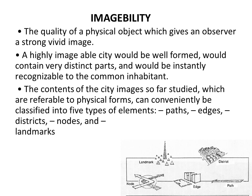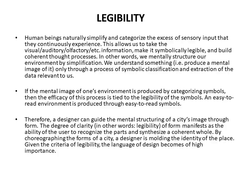The contents of city images referable to physical forms can be classified into five types of elements. First is paths — walkways, streets, roads. Second is edges — how streets intersect with buildings or structures lined along them. Third is districts — certain larger areas. Fourth is nodes — certain important points, such as an intersection of streets or an important space in the marketplace. Fifth is landmarks — certain elements you remember of a city; for example, India Gate is a landmark in New Delhi.